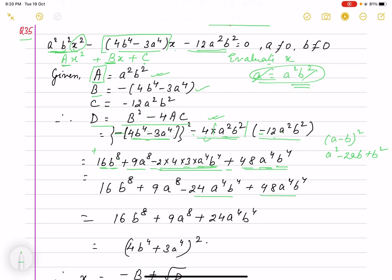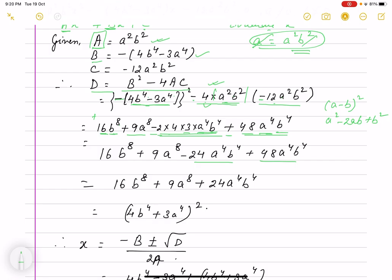So we can simplify: 16b⁸ + 9a⁸ + 24a⁴b⁴ can be written as (4b⁴ + 3a⁴)². The aim is to make it a perfect square so that when we take the square root, a perfect number will come out.